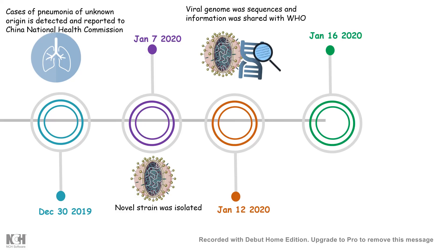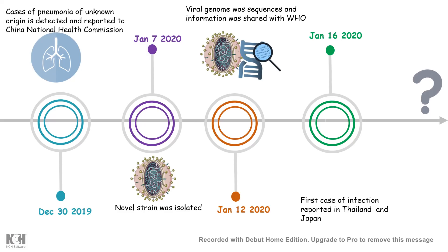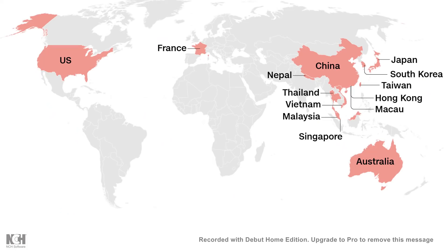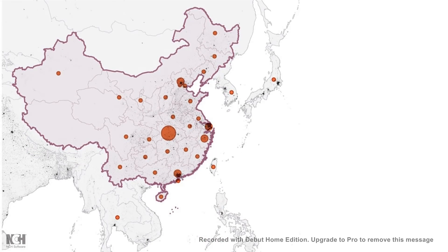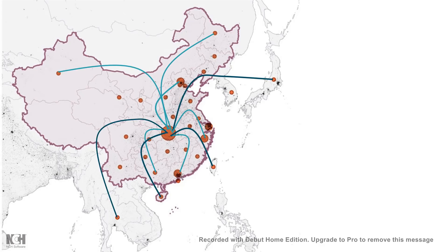By January 16, 2020, the outbreak spread to Japan and Thailand, and many Western and Asian countries became affected. China, Australia, France, and some parts of the US were also affected, showing how rapidly this virus was spreading. From the center of the outbreak in Wuhan, the virus spread across China and nearby countries such as Japan and Thailand.